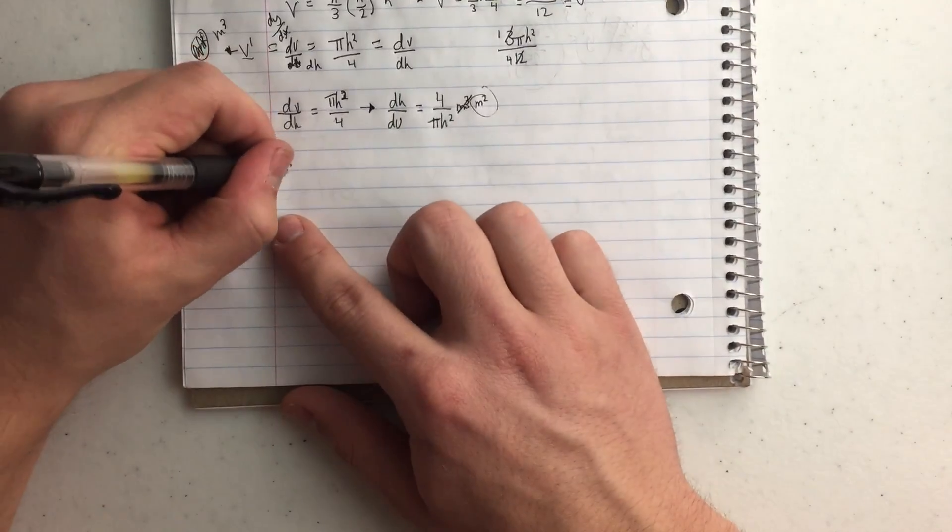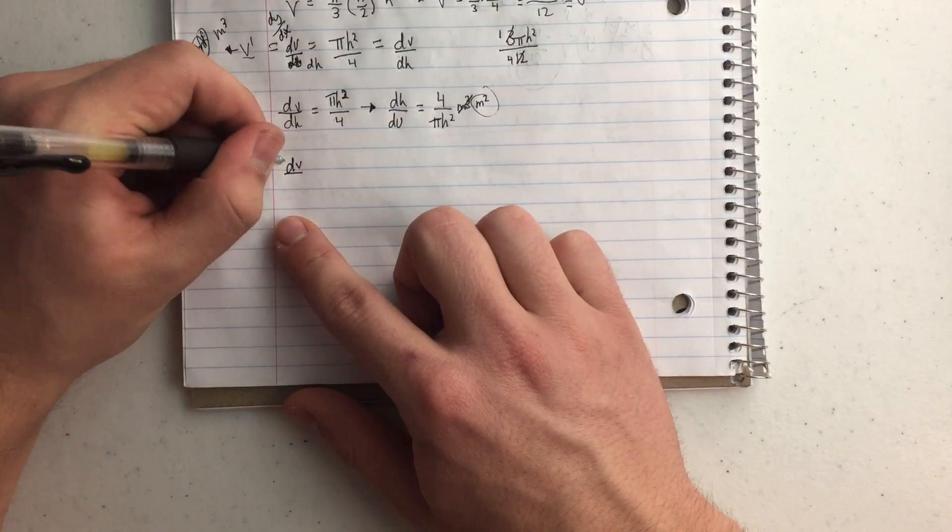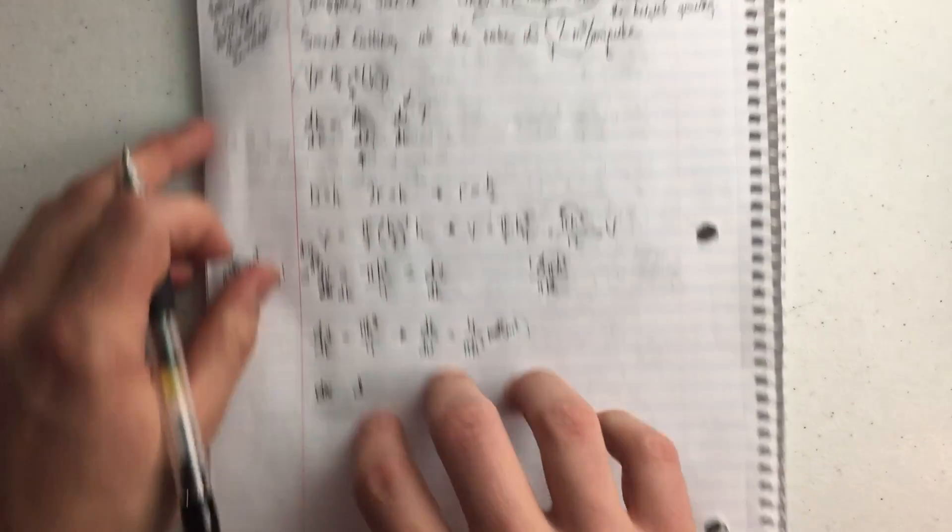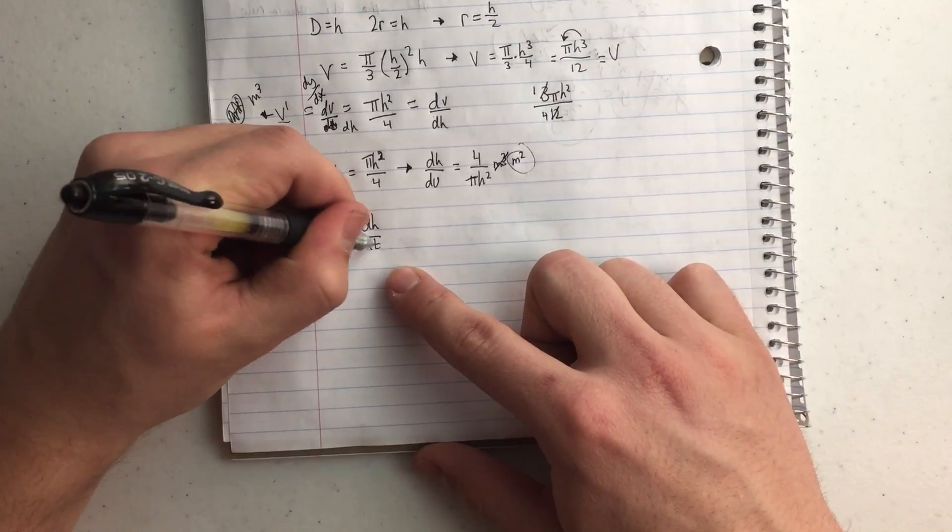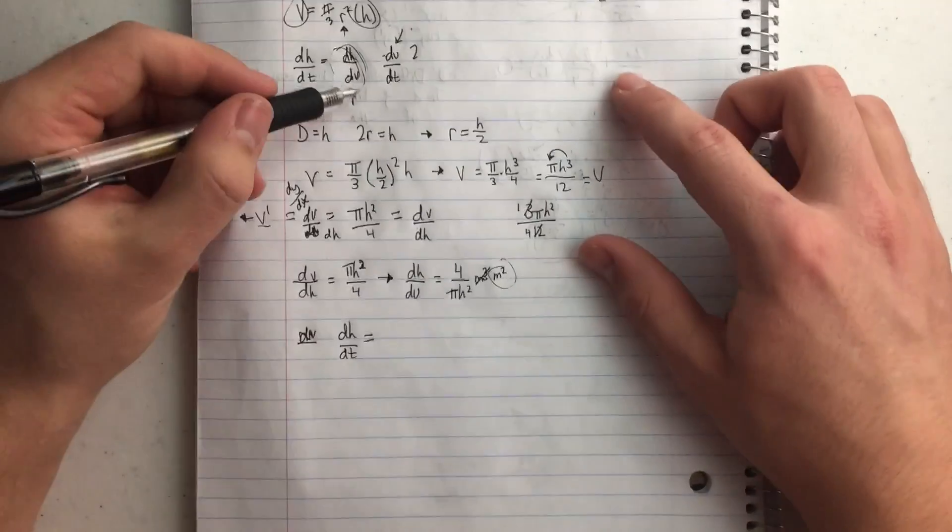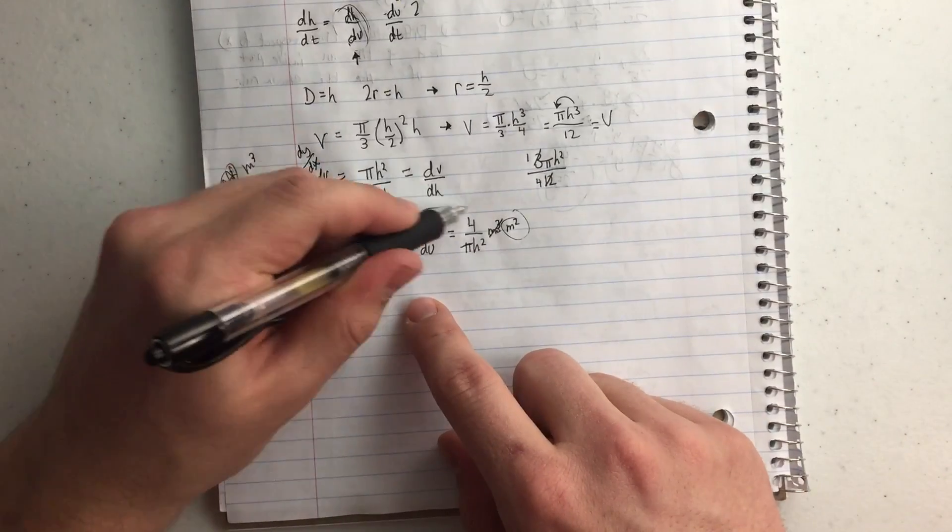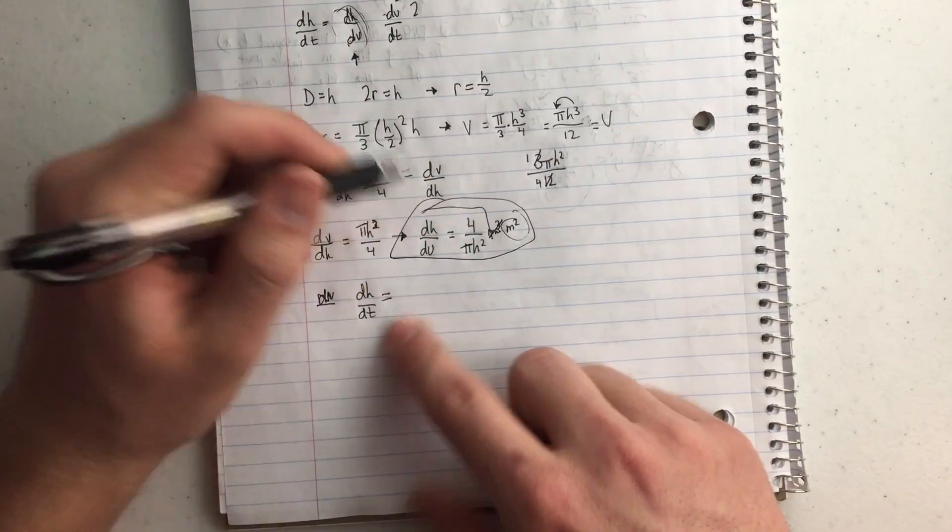So now I'm going to put it in my equation. So I have dh, just copying this thing up here. So I have dh over dt equals, and then my dh over dv is this thing right here.